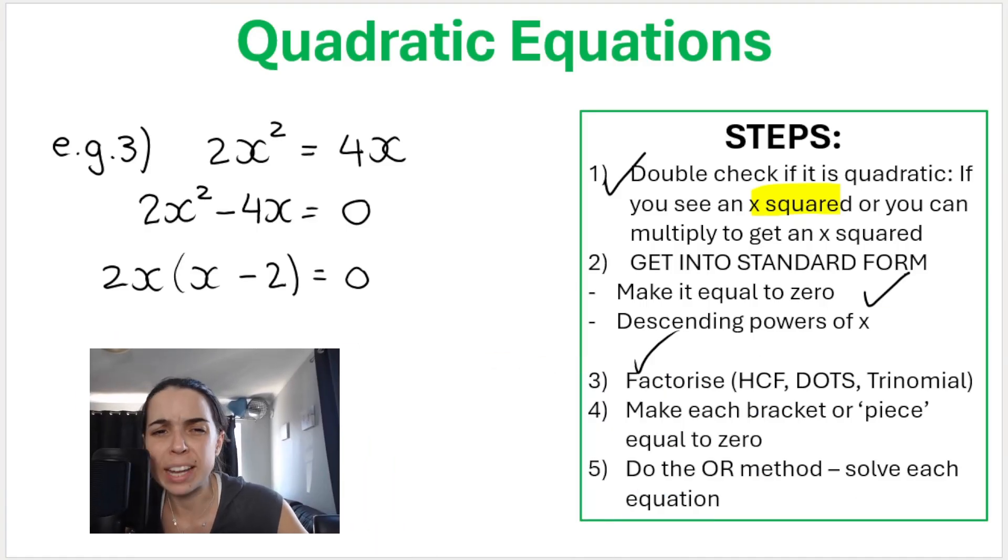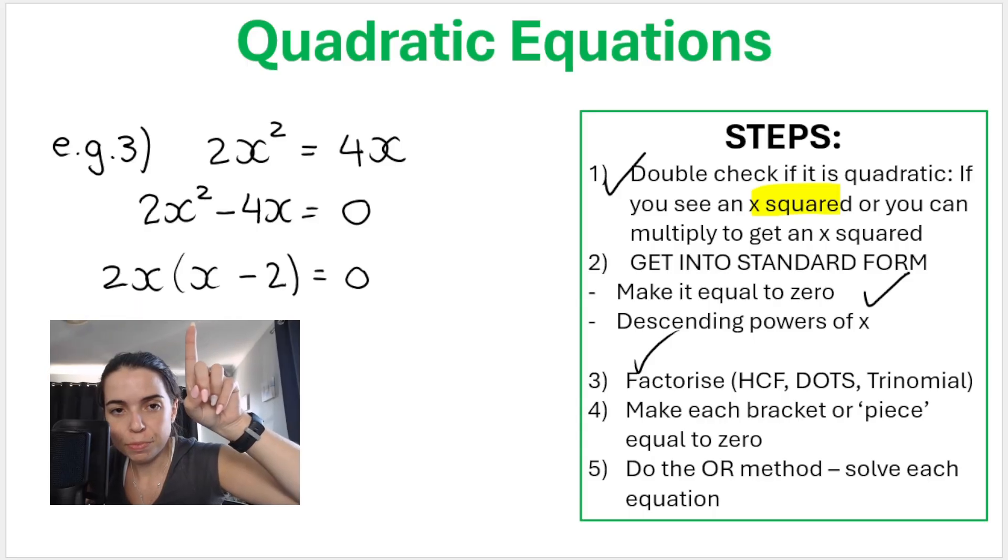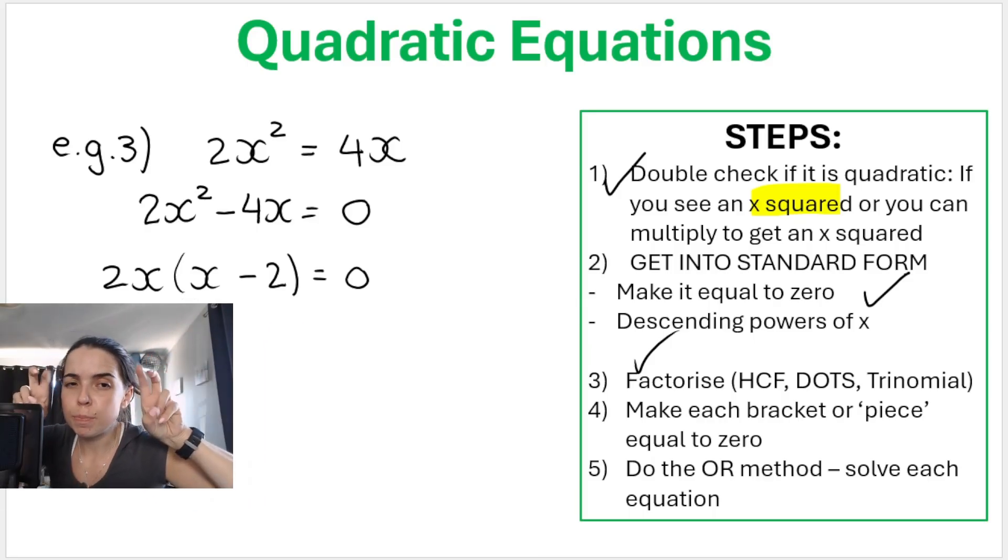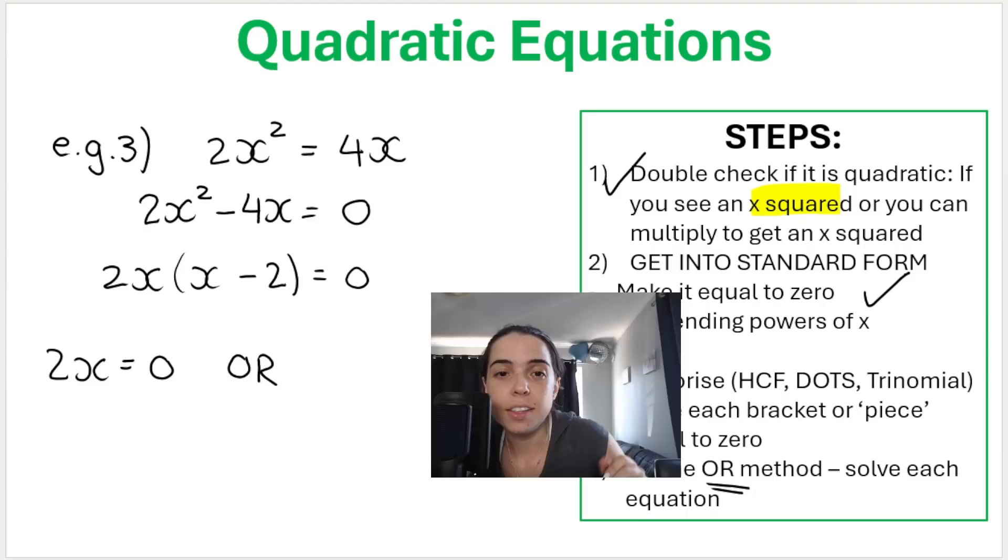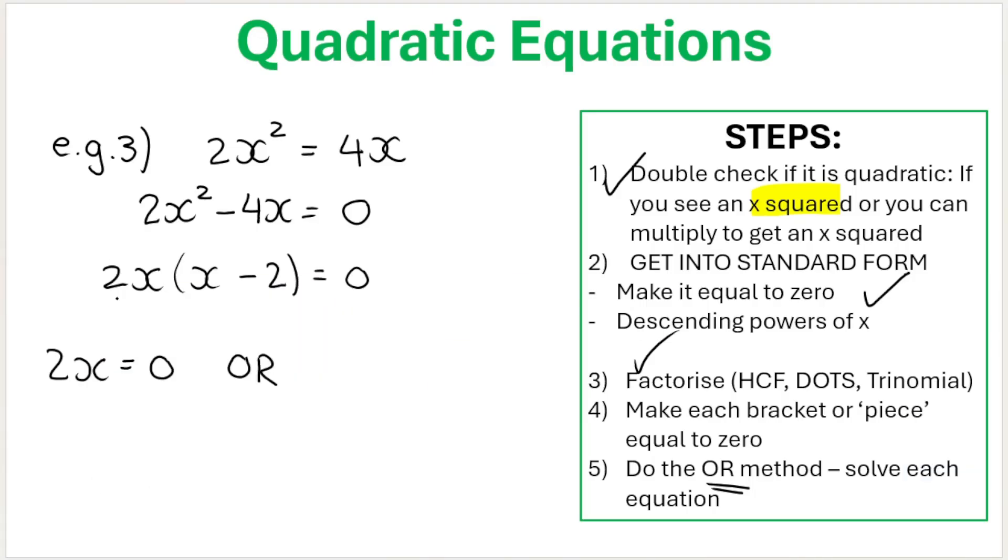Once you've factorized it, make each bracket or each piece equal to 0. This is a bracket x minus 2. And this here, it's not in a bracket, I'm just calling it a piece. We're going to take this piece, 2x, and make that equal to 0. Or we do the OR method, put the OR in between. We take this x minus 2 and make that equal to 0. Then we solve each equation. Inverse operation of times 2 is divide by 2. 0 divided by 2 is 0. Or inverse operation of minus 2, it's going to be 0 plus 2, which is positive 2.